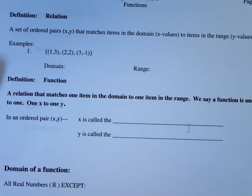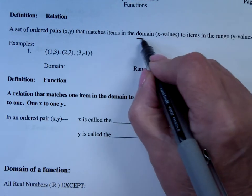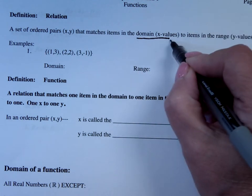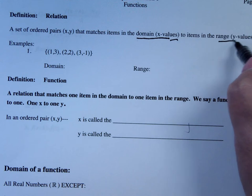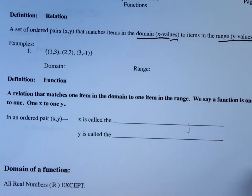It says, what is a relation? A relation is a set of ordered pairs x, y that matches the domain, which we term the x values, to items in the range, which are the y values.